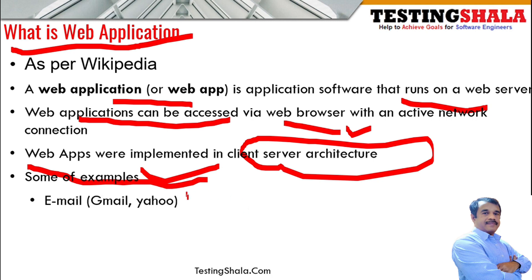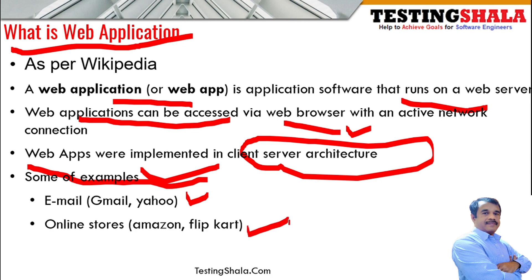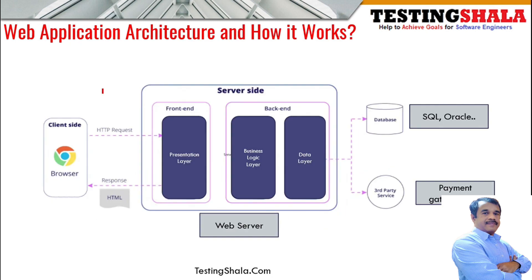Some examples of web applications are Gmail, Google Search, Amazon, and banking platforms like Citibank, SBI Bank, and American Express Bank. These are all examples of web applications. Let us now understand the overall architecture of a web application and how it works.